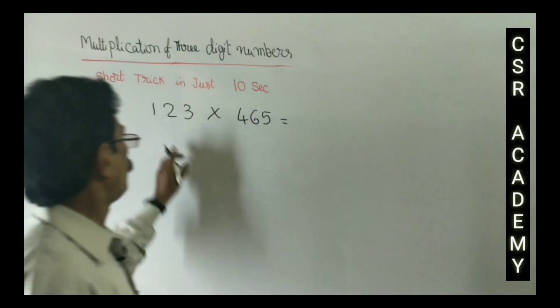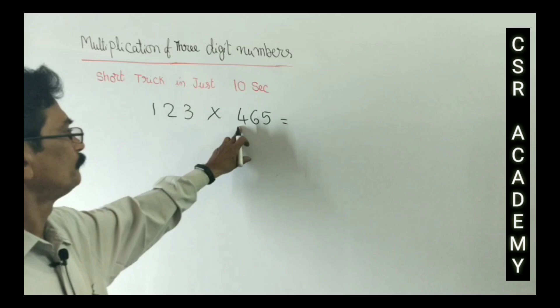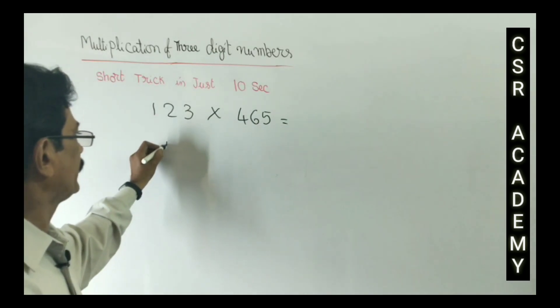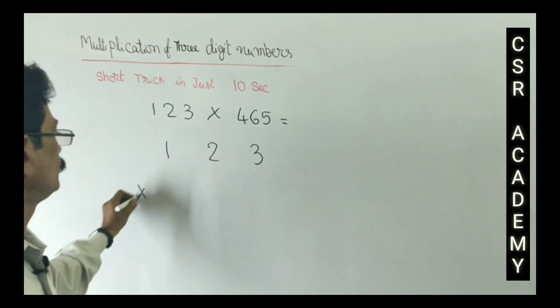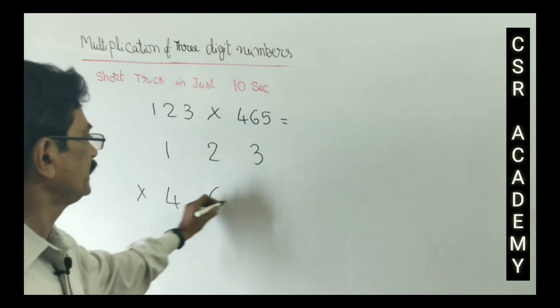We take one problem: 123 into 465. We take the multiplication, 123 into 465.